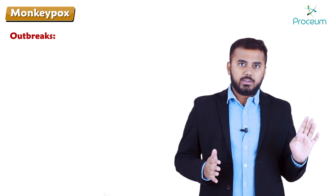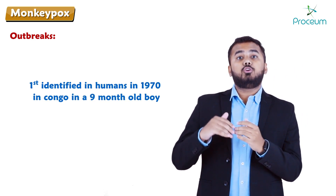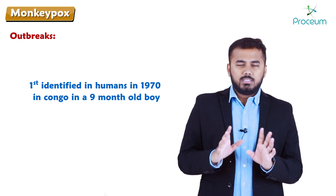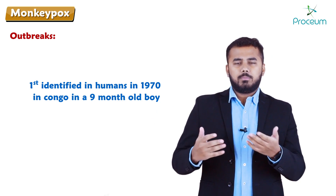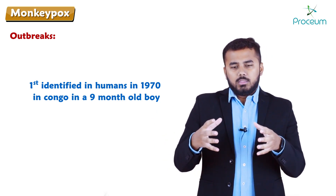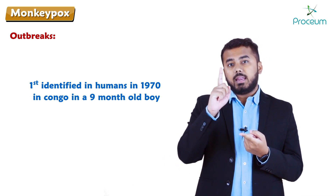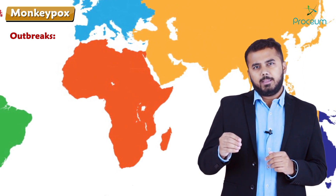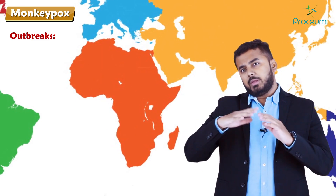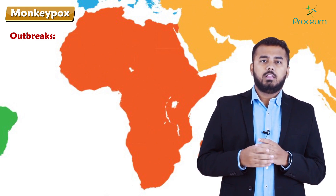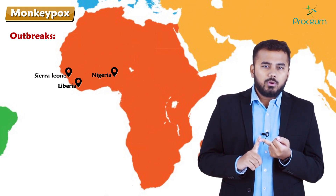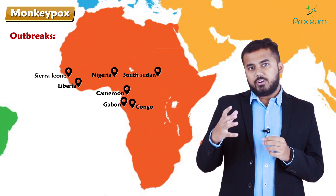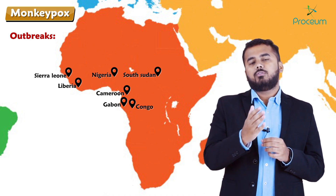The first outbreak occurred among monkeys themselves in 1958. The first human case was recorded in 1970 — a nine-month-old boy who contracted the disease through contact with pets such as rodents and monkeys. Since 1970, human cases have been reported in 11 African countries including Nigeria, Liberia, Sierra Leone, South Sudan, Cameroon, Congo, and Gabon.